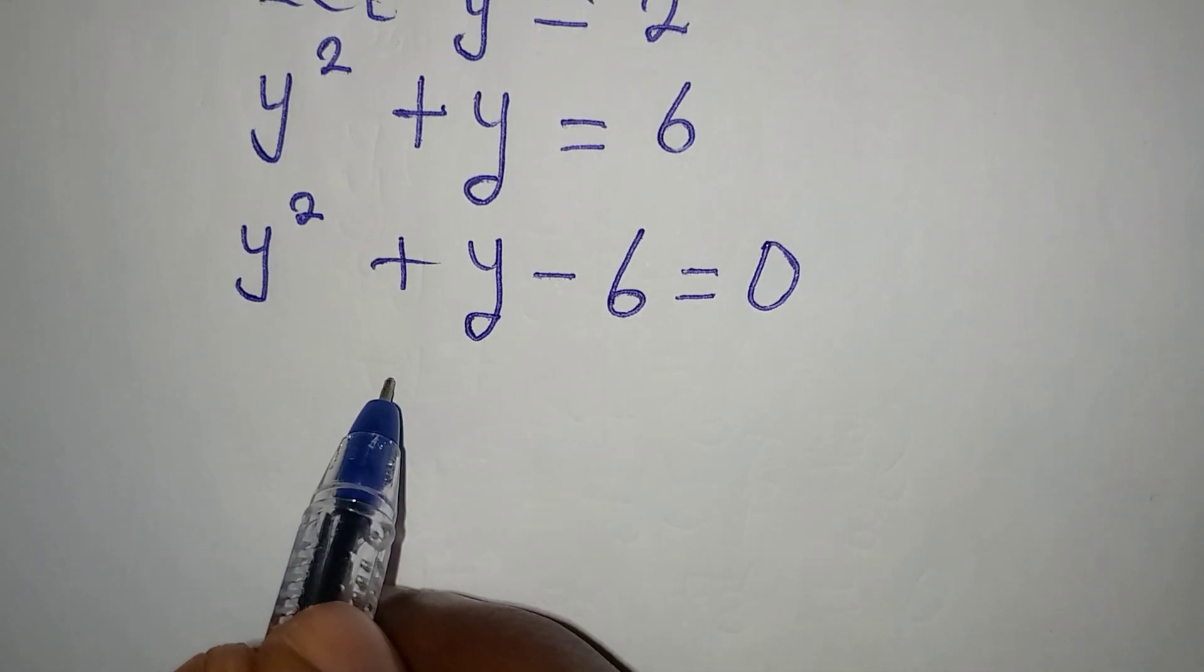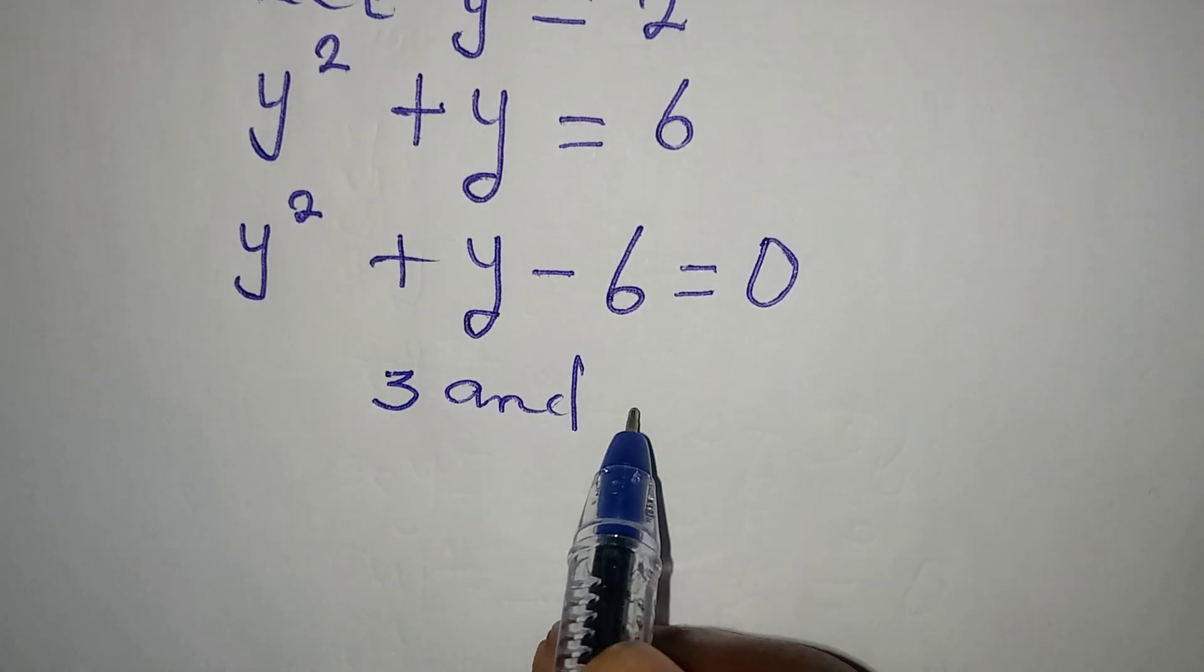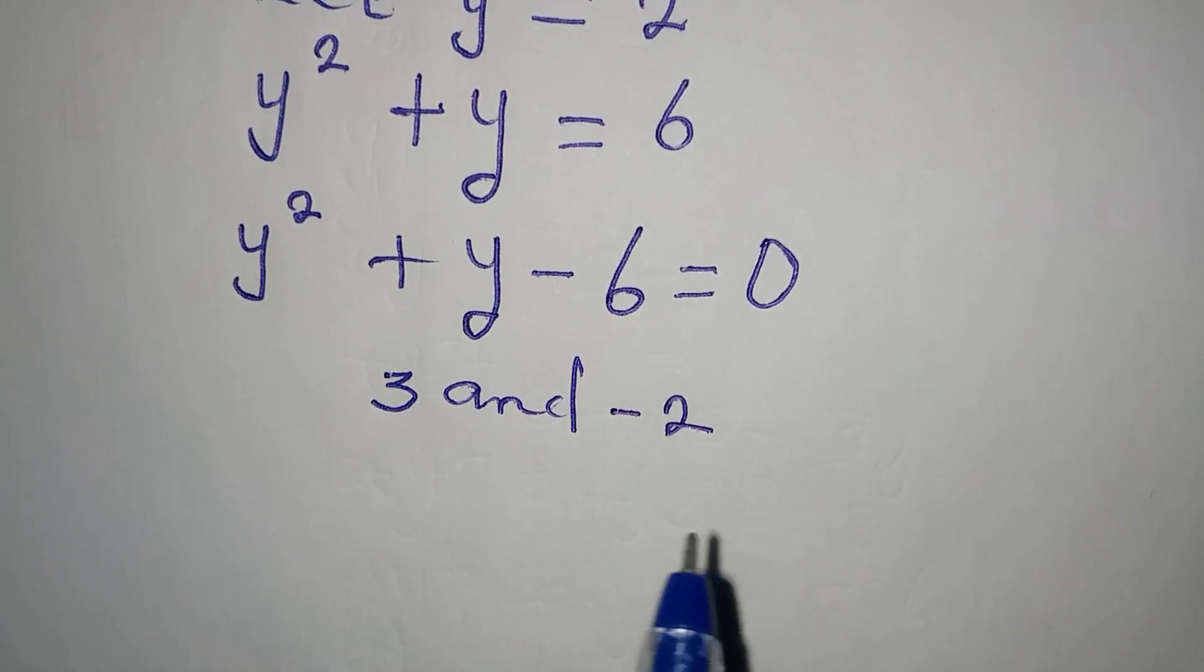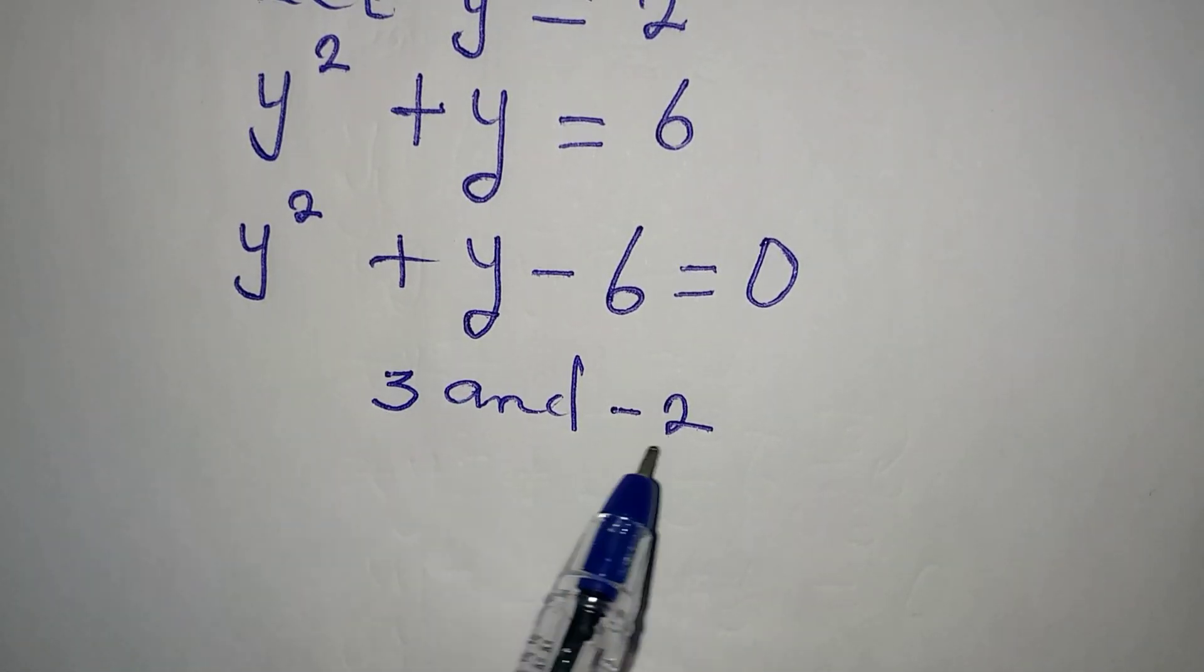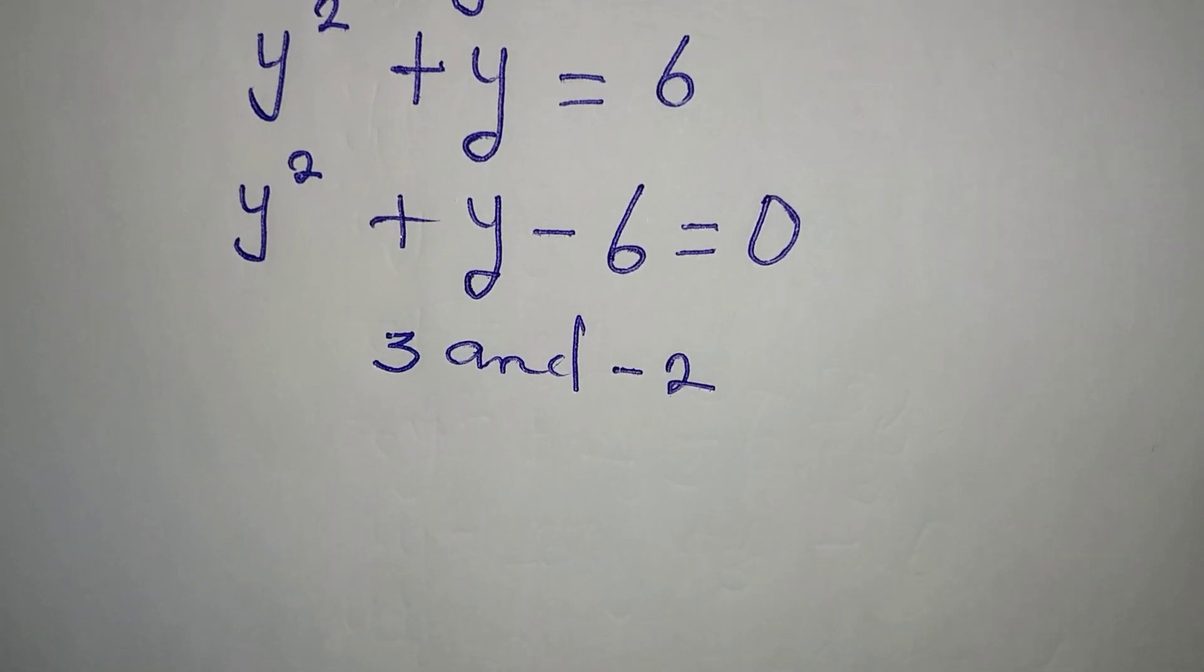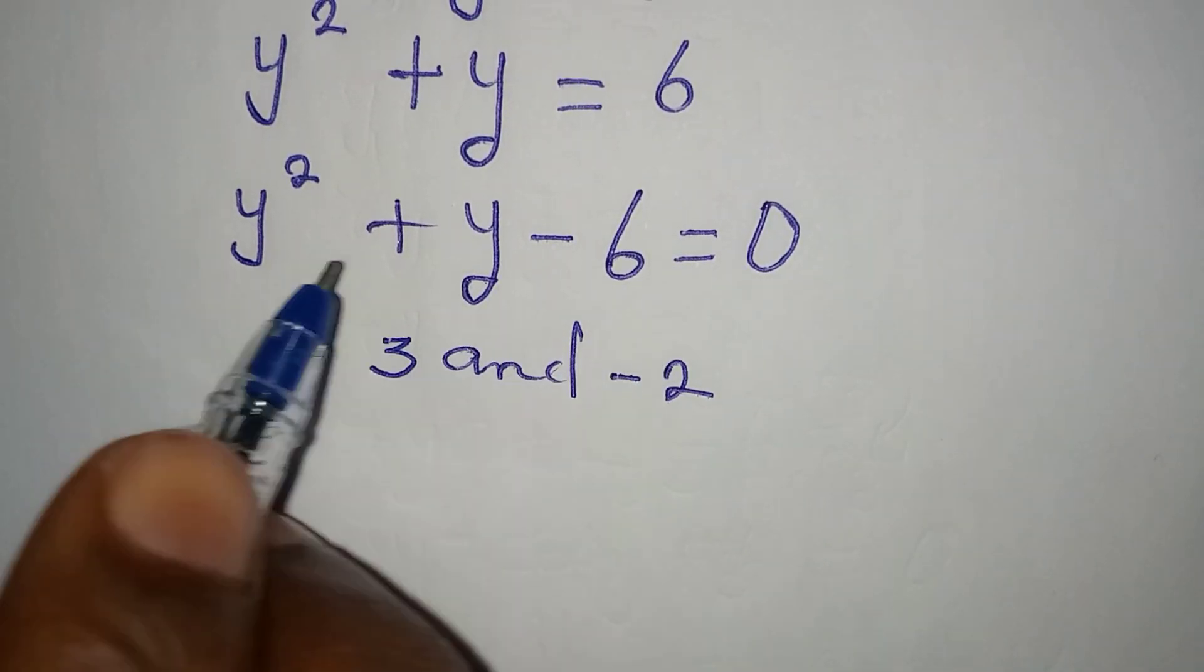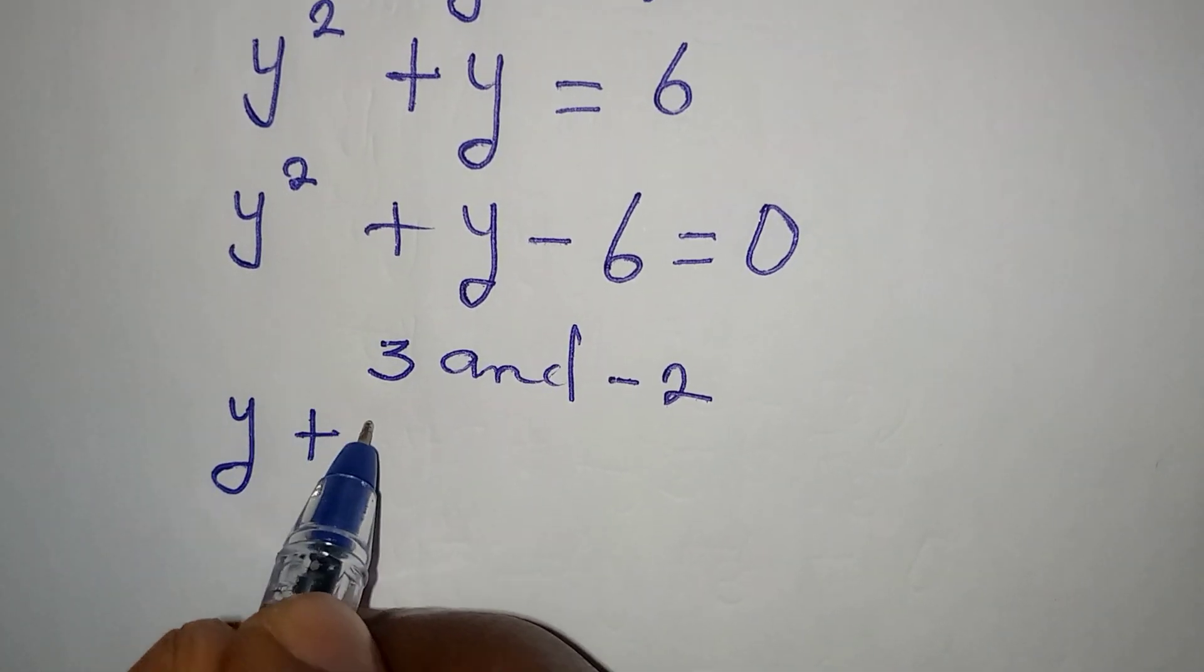So the number will be 3 and minus 2. Because 3 minus 2 will give 1, and 3 times minus 2 will give minus 6. So in that case, to factorize this, it means that we will be having y plus 3.